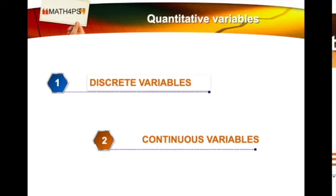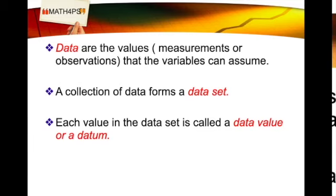Quantitative variables are classified into discrete and continuous variables. A discrete variable is measured by counting, such as the number of students enrolled in a class, the number of siblings in a family, or the number of patients admitted in a hospital. Continuous variables are measured using an instrument, such as the height of a person, the weight of a person, or the IQ of a person. Data are the values, measurements, or observations that variables can assume, and a collection of data forms a data set.